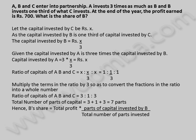Hence, B's share is equal to total profit multiplied by parts of capital invested by B, divided by total number of parts invested. This equals 700 into 1 by 7 rupees, which equals 100 rupees. The share of B is 100 rupees.